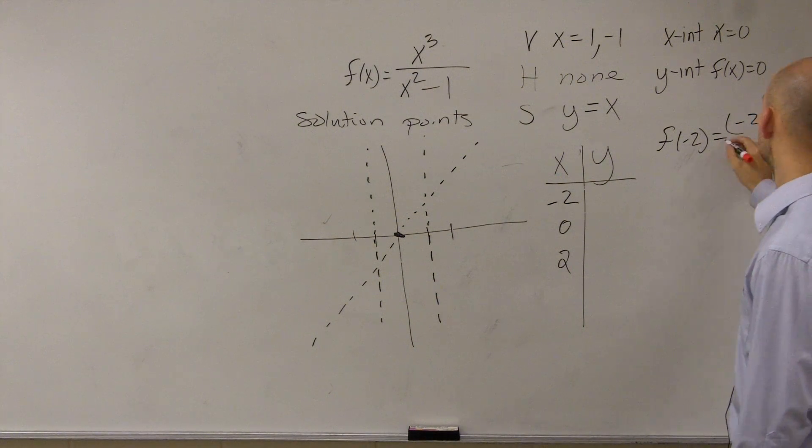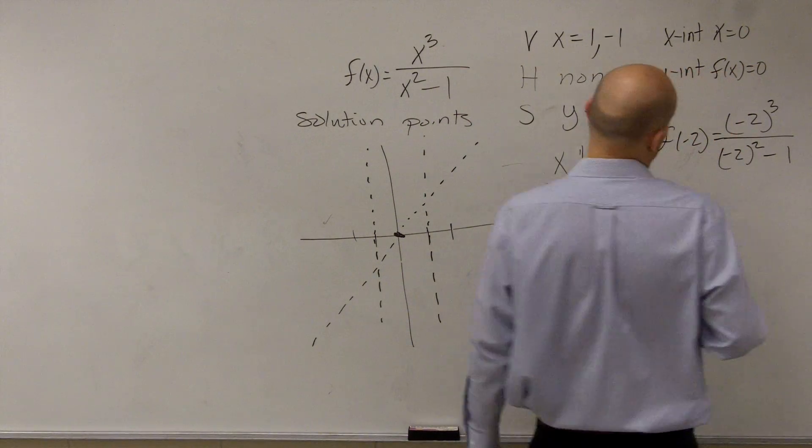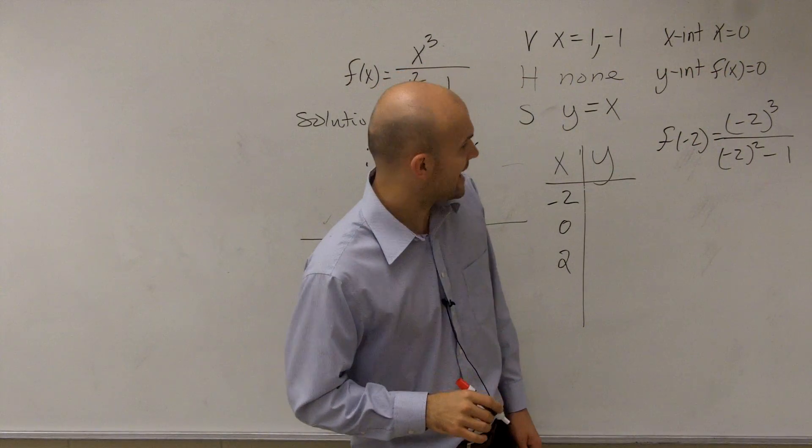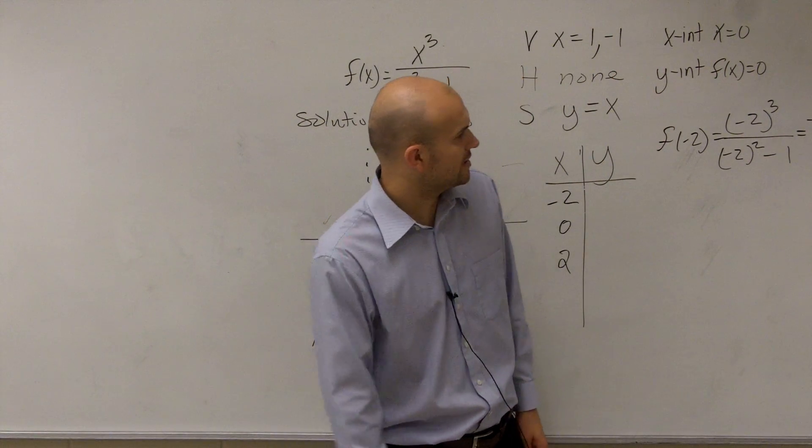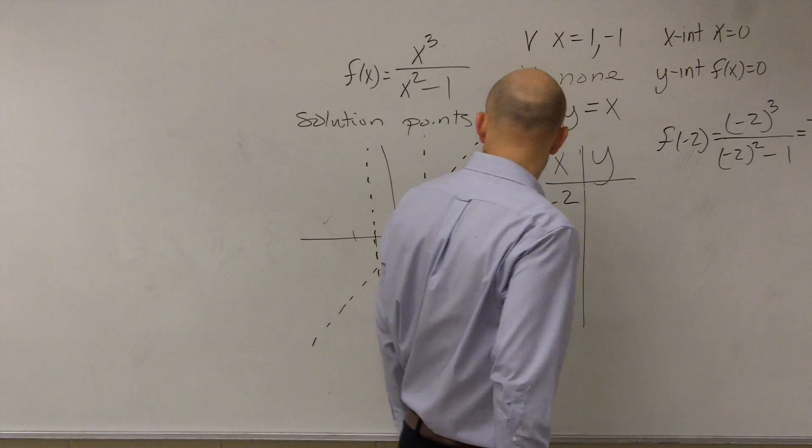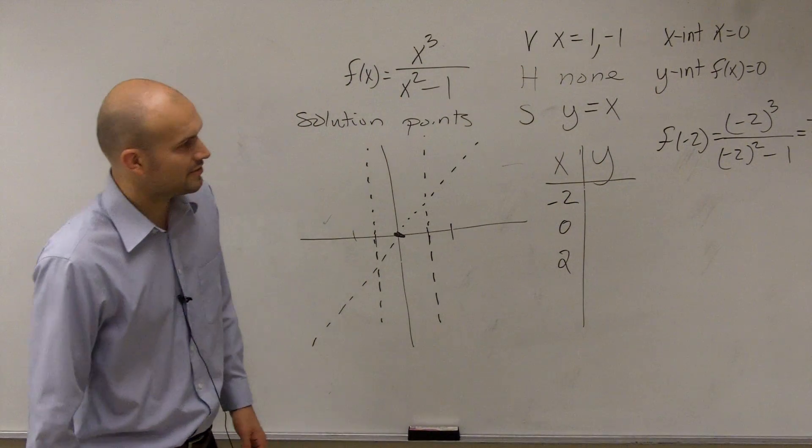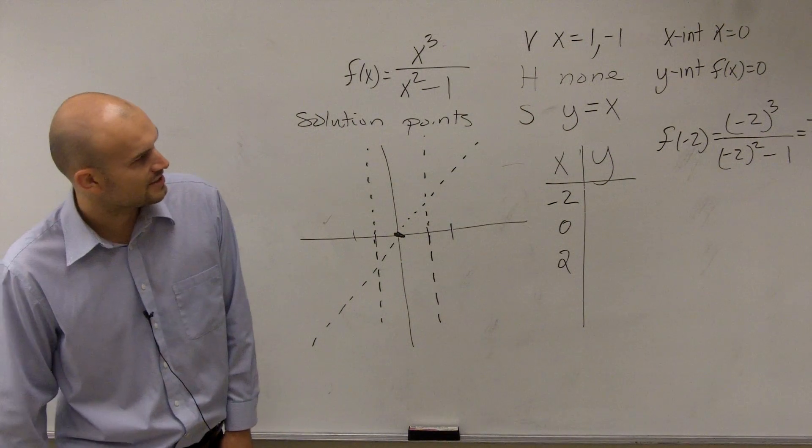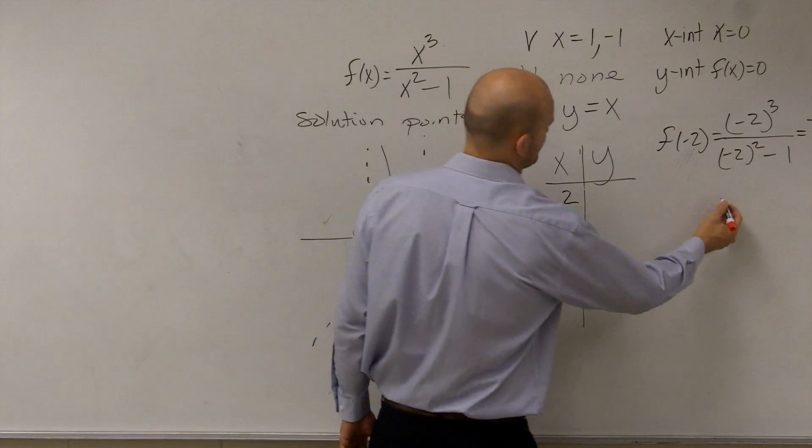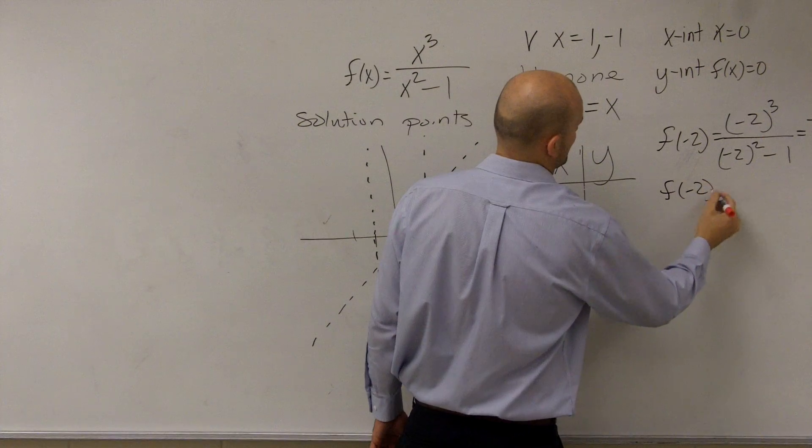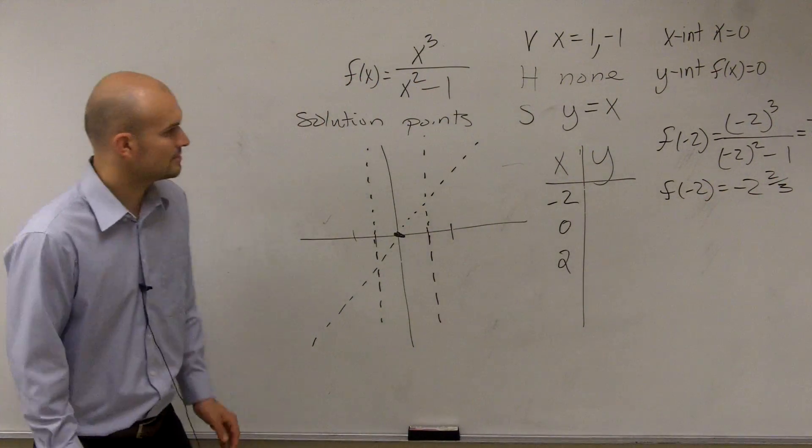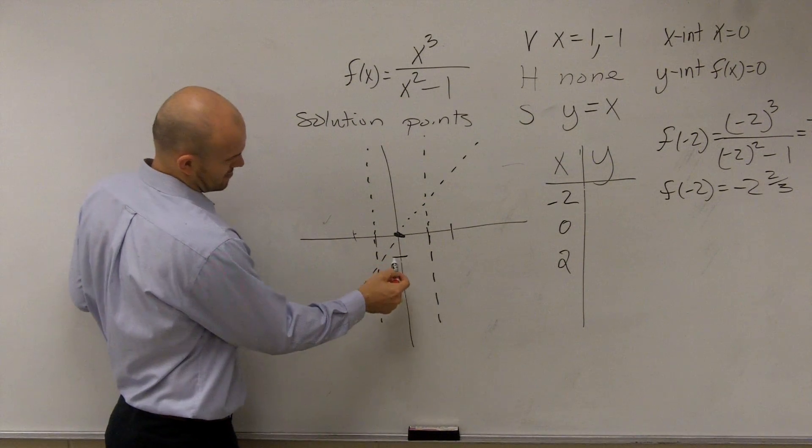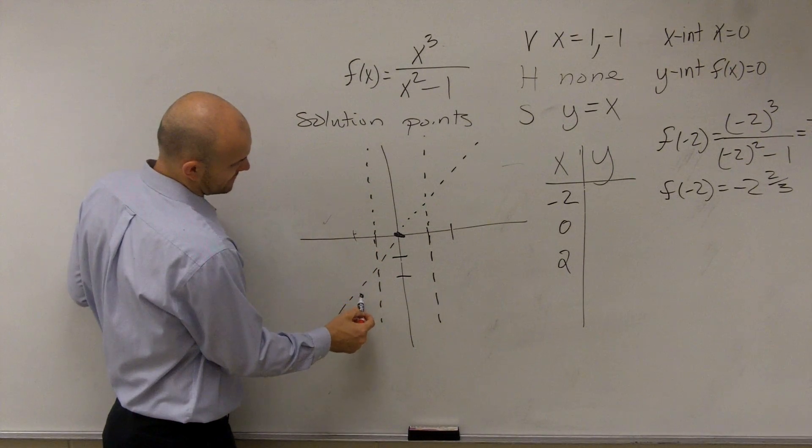So all you do if you don't have a calculator is f of x equals negative two. So it would be negative two cubed divided by negative two squared minus one. Negative two cubed is going to be negative eight divided by three. So it's negative eight thirds, which is two and two thirds. So I go at negative two. I'm at like negative two and two thirds.